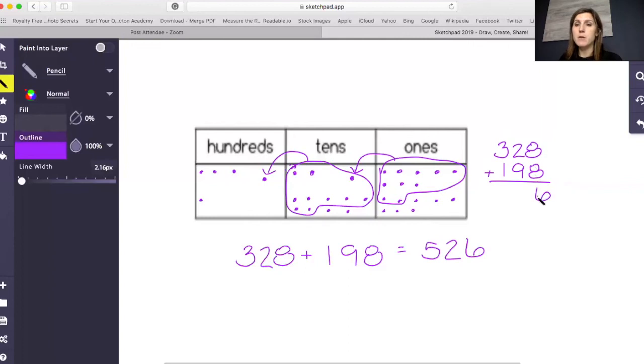So here, eight plus eight equals 16. I put my six in the ones place, take the one over to the tens place, which is just what I did here on the place value chart. Now, one plus two equals three. Three plus nine equals 12. So I have two tens and 100. Again, I showed it right here. One plus three equals four plus one equals five. And I got the same answer.